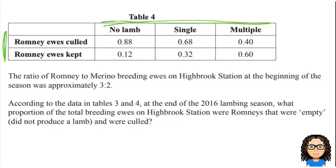Now we've got another piece of information here. The ratio of Romney to Merino is 3 to 2. So 3 to 2 means there are five parts in total — three parts Romney, two parts Merino. That's the same as a fraction of 3 fifths Romney compared to 2 fifths Merino.